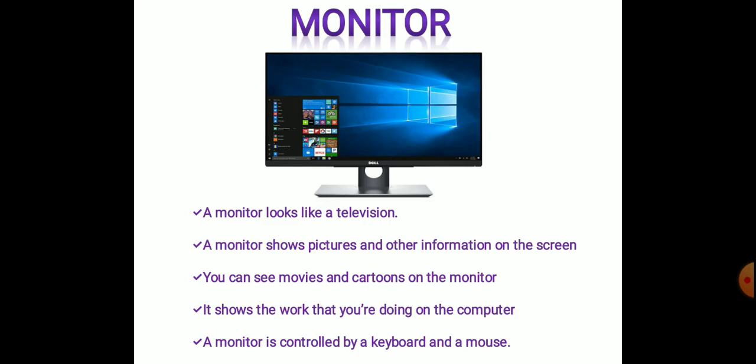First comes the monitor. A monitor looks like a television. A monitor shows pictures and other information on the screen. You can see movies and cartoons on the monitor. It shows the work that you are doing on the computer. A monitor is controlled by a keyboard and a mouse.